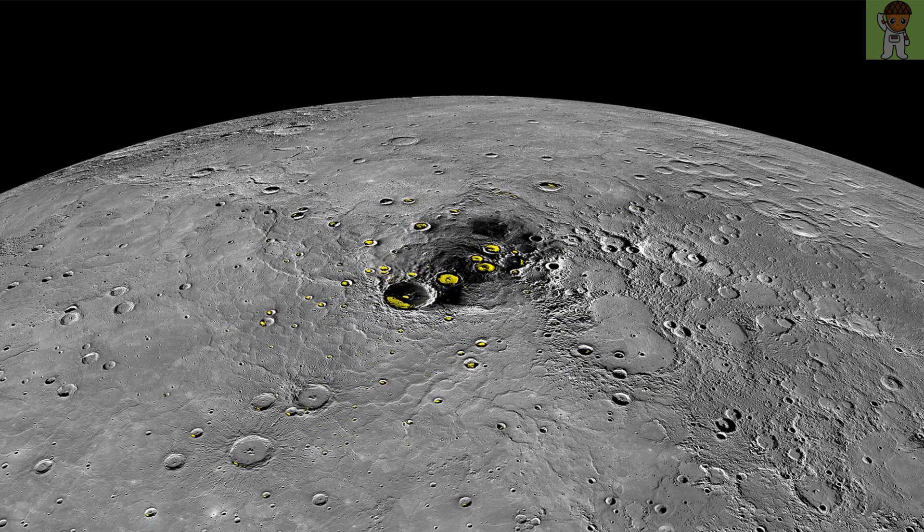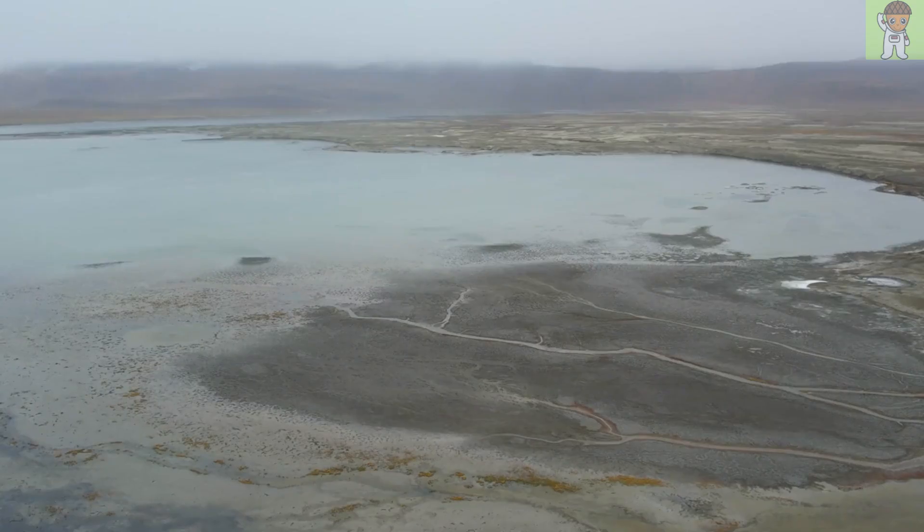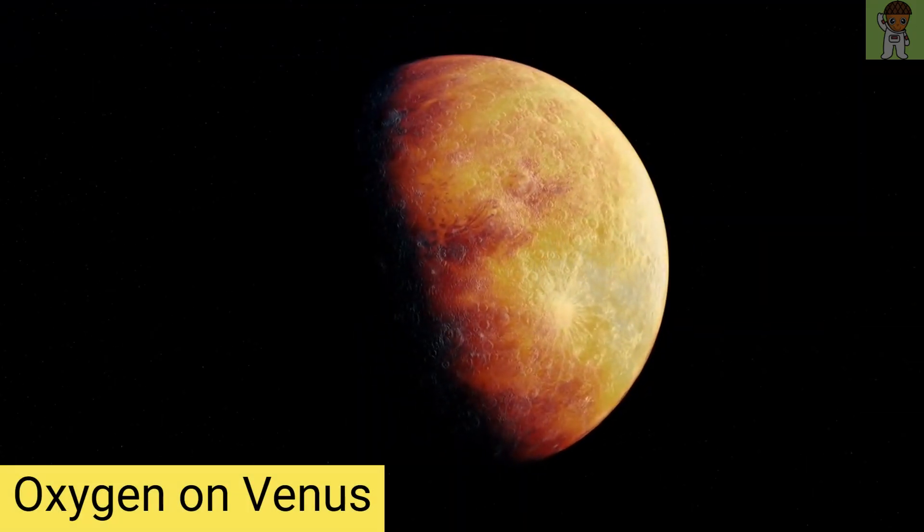This year, scientists also discovered that salty glaciers in some of Mercury's craters could provide the necessary conditions for some extreme lifeforms to thrive. Oxygen found on Venus.